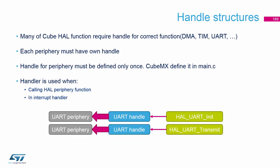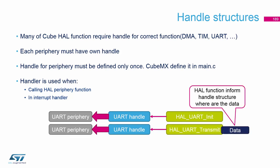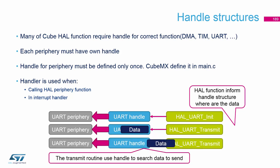Then with transmitting, when we want to send data, we first store information into the handle — how many bytes we want to send and where to find the bytes. And then during the sending, this information is read from the handle and set inside the UART periphery.